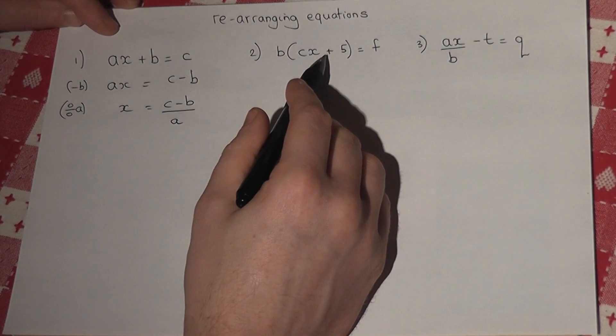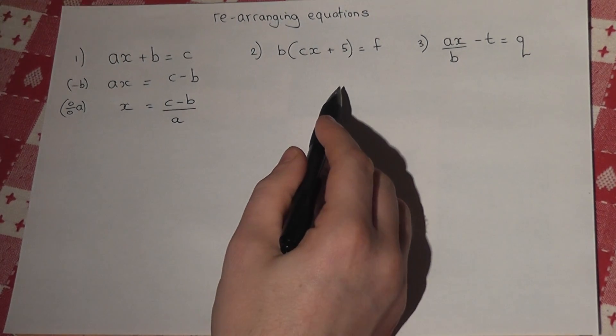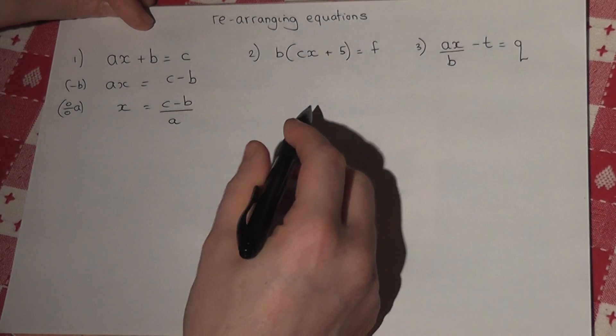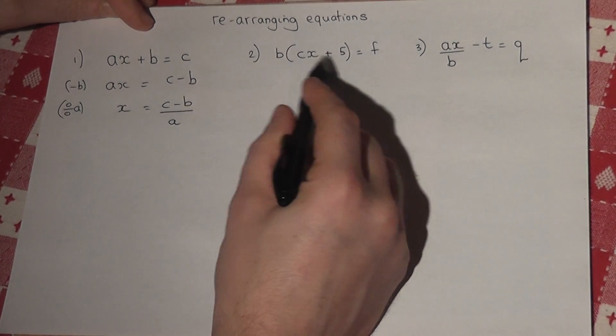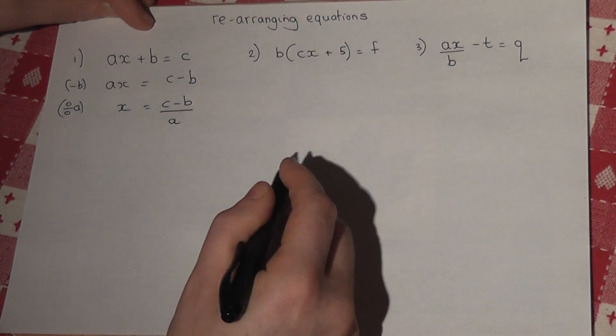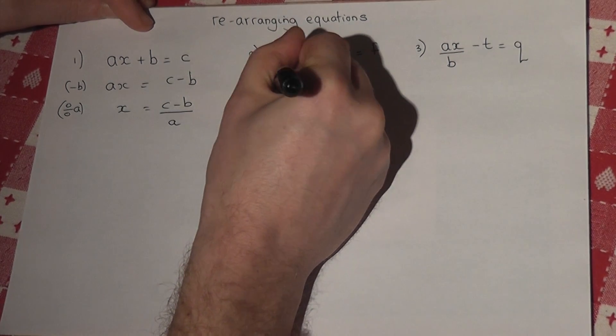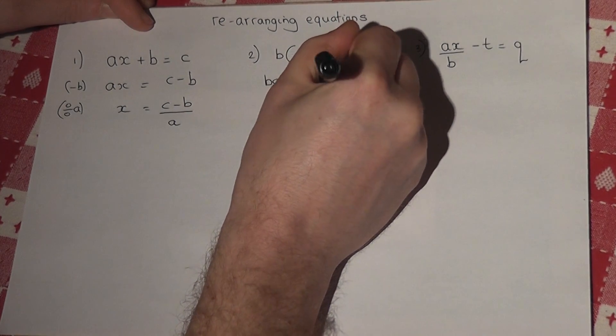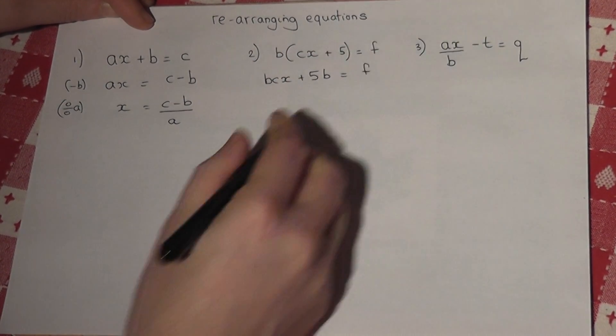Now, the second one looks more difficult, there's a bracket there. Now generally, the best way to solve these sort of ones is to expand the bracket first. So I times what's in the bracket by b. So I get bcx plus 5b equals f.